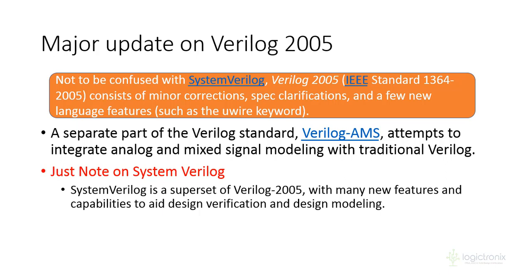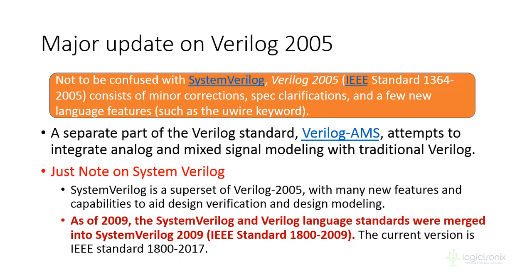SystemVerilog is basically the superset of Verilog 2005. After the 2005 version of Verilog, there is SystemVerilog. The revision of Verilog after 2005 comes from SystemVerilog, which consists of lots of features not incorporated in Verilog before 2005. After Verilog 2005, that is 2009, Verilog and SystemVerilog are merged, standardized as IEEE 800-2009.